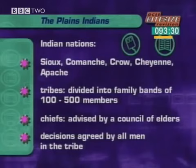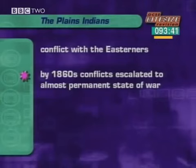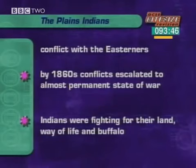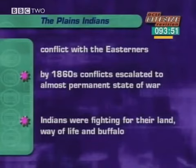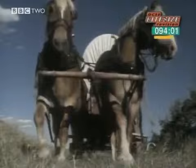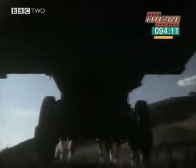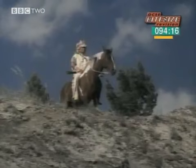By the 1860s, sporadic conflicts between the Indians and settlers from the east were escalating into an almost permanent state of war. The Plains tribes were fighting to preserve their land, their way of life, and their buffalo. The wagon trains crossing the area on the way to California disrupted the vast herds of buffalo and made it more difficult for the Indians to hunt. Driven close to starvation, the Plains tribes started to fight back. For almost the first time, the United States found itself in a prolonged war with the Indians. From now on, the white population of America would always remember the Indian as the bloodthirsty savage.